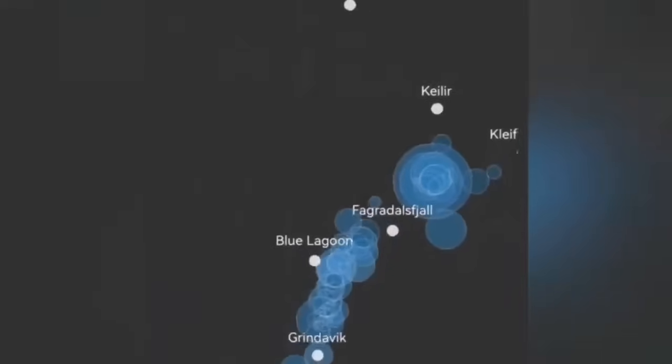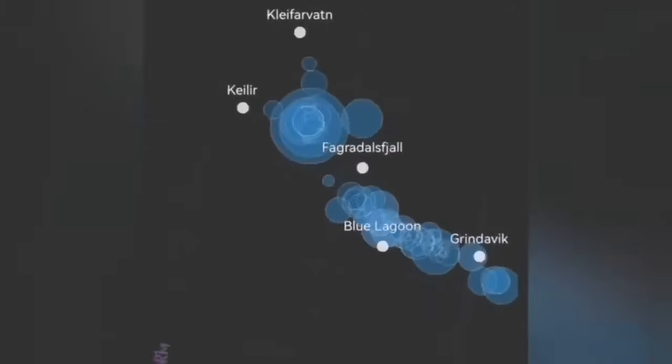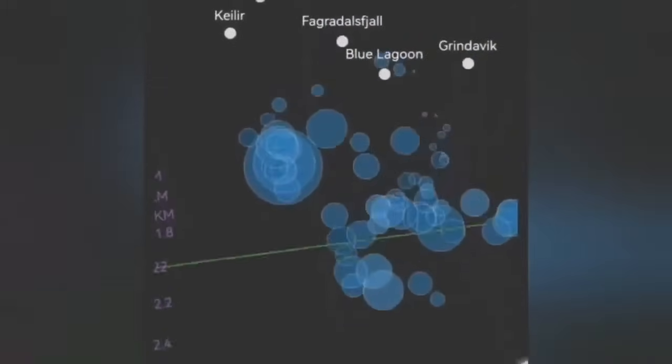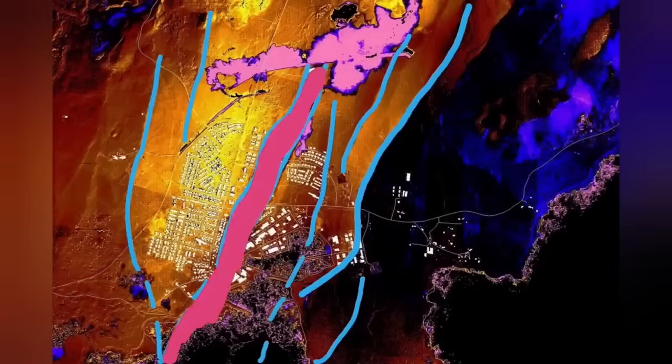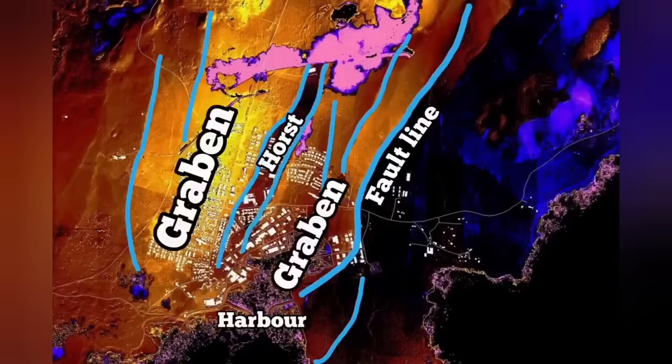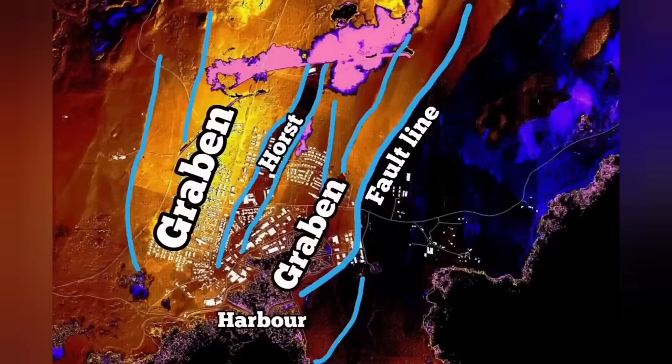Before that, we had activity to the north of Grindavik in Hagafell and Sundhnukagigar. We had eruptions in November, then December eruption, and January again eruption through this graben in the middle part and the fault lines. We had cracks in Grindavik but no eruption—magma was not there. This is going to change now, it seems.